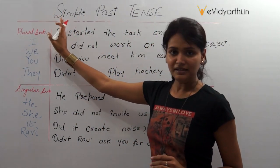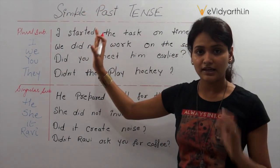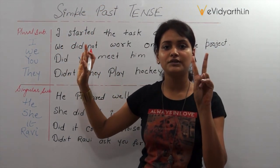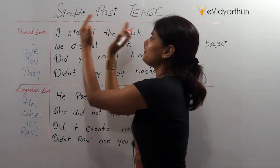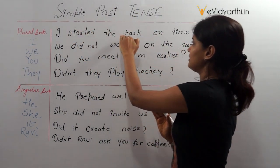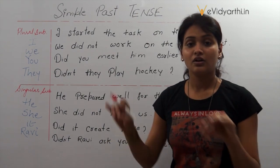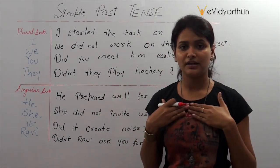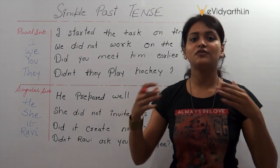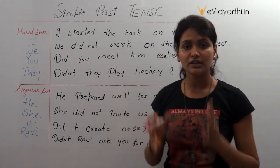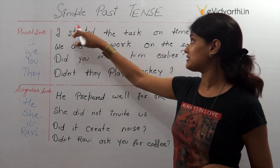For example: 'I started the task on time.' Along with the subject in simple past tense, we use the second form of the verb when it is a positive sentence — a statement. We use the second form of the verb. I started the task on time. I saw you yesterday. I finished my work on time. I played with my friends. She cooked very delicious food. My father brought things for me. So with every subject we use the second form of the verb in a simple past positive sentence.